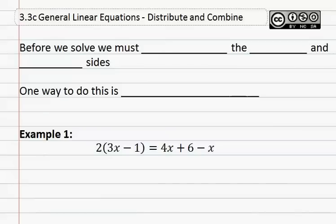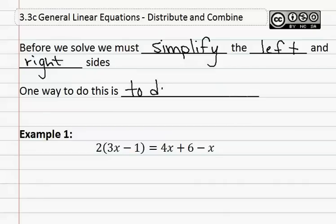Before we solve, we must simplify the left and right sides. One way to do this is to distribute, then combine like terms.